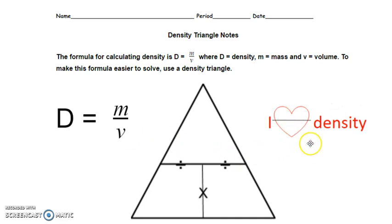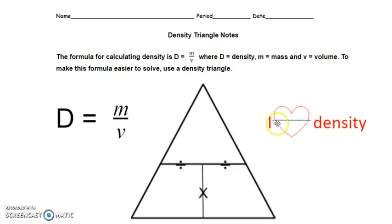But what does 'I Heart Density' really mean? Take a close look at the heart. The top part of the heart above the line looks a lot like the letter M. On the bottom of the line, the heart looks like a V shape — like volume. This helps you remember that density equals mass over volume. Write this on your paper now, and make sure you draw the little line through the heart to represent the fraction bar or division sign.